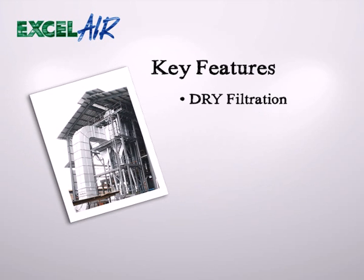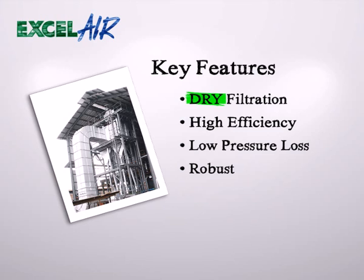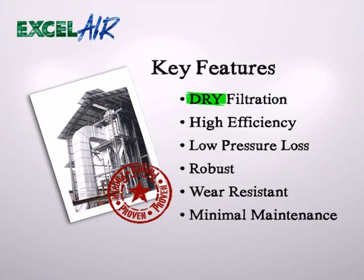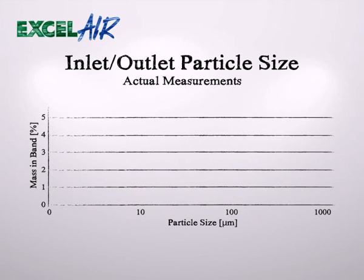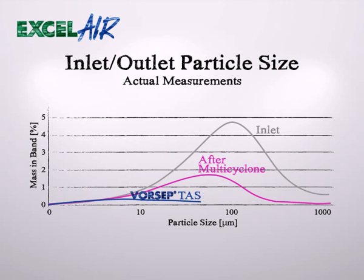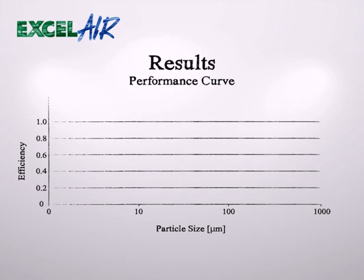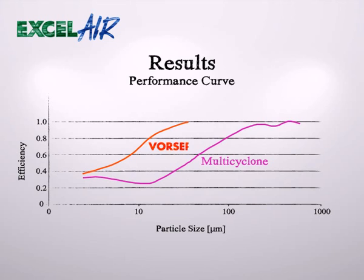Key features of the VORCEP include dry filtration, high efficiency, low pressure loss, robust and wear-resistant construction, and minimal maintenance. The VORCEP not only reduces the particle sizes, but also collects particle sizes over the whole spectrum. The efficiency curve of the VORCEP compared to typical multi-cyclones puts the efficiency of the VORCEP system into perspective, with a vast difference in reduction performance.